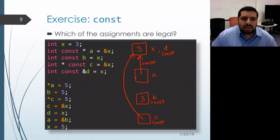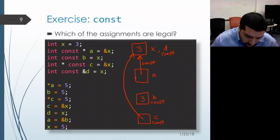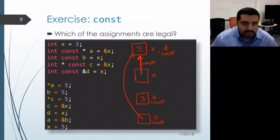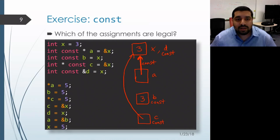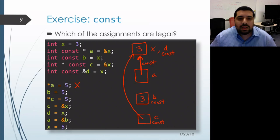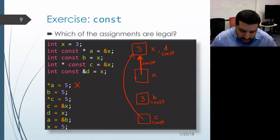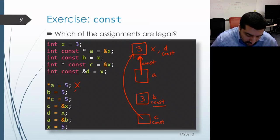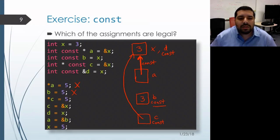Now let's look at the individual assignments. In the first one, we dereference a, which means we follow the pointer to the object it's pointing at. We encounter a const along the way, which means we won't actually be able to modify that object. Unfortunately, that's exactly what we're trying to do, so the compiler will catch that and give us an error. On the next statement, we attempt to modify b, but b was declared as const, so we're not allowed to assign into it, and the compiler won't let us do that either.